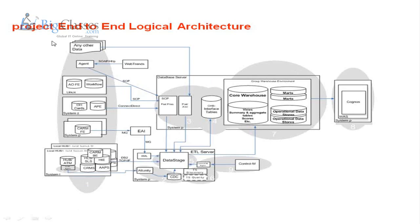Layer one is called the front-end layer, which we call source systems. These source systems send data every day to our data warehouse from heterogeneous sources — mainframe, Oracle, DB2 database systems, and web-based applications. All this heterogeneous source data is captured and loaded into an ETL tool called DataStage, and from there it is loaded into the warehouse.